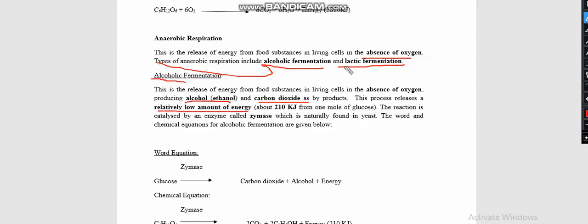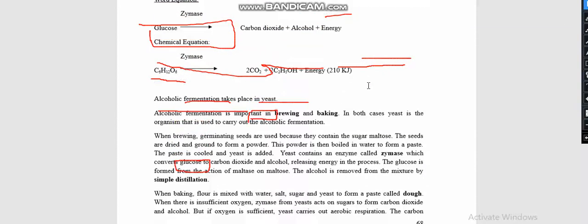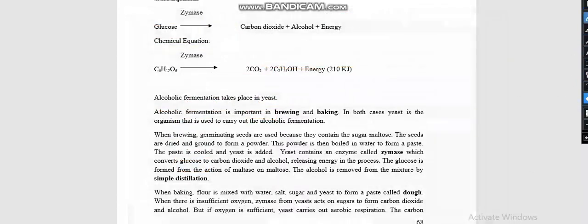Alcoholic fermentation is different from lactic fermentation because it produces a very low amount of energy. In general, anaerobic respiration produces very low energy compared to aerobic. This process of alcoholic fermentation is accompanied by the enzyme zymase, which speeds up the rate of chemical reaction. Alcoholic fermentation takes place in yeast, and its applications are in brewing and baking.